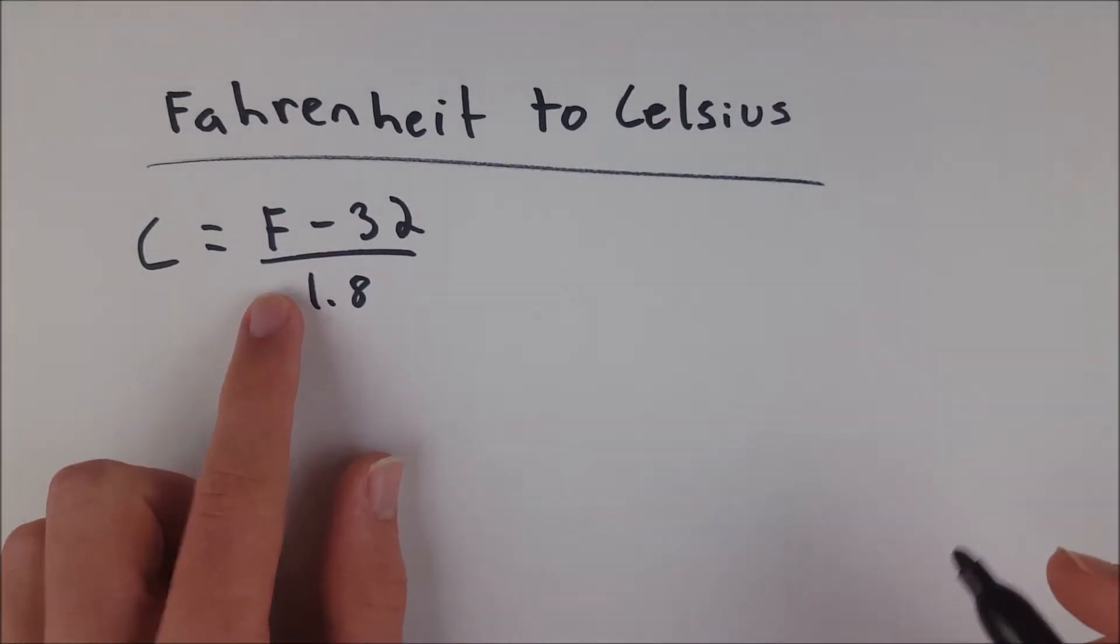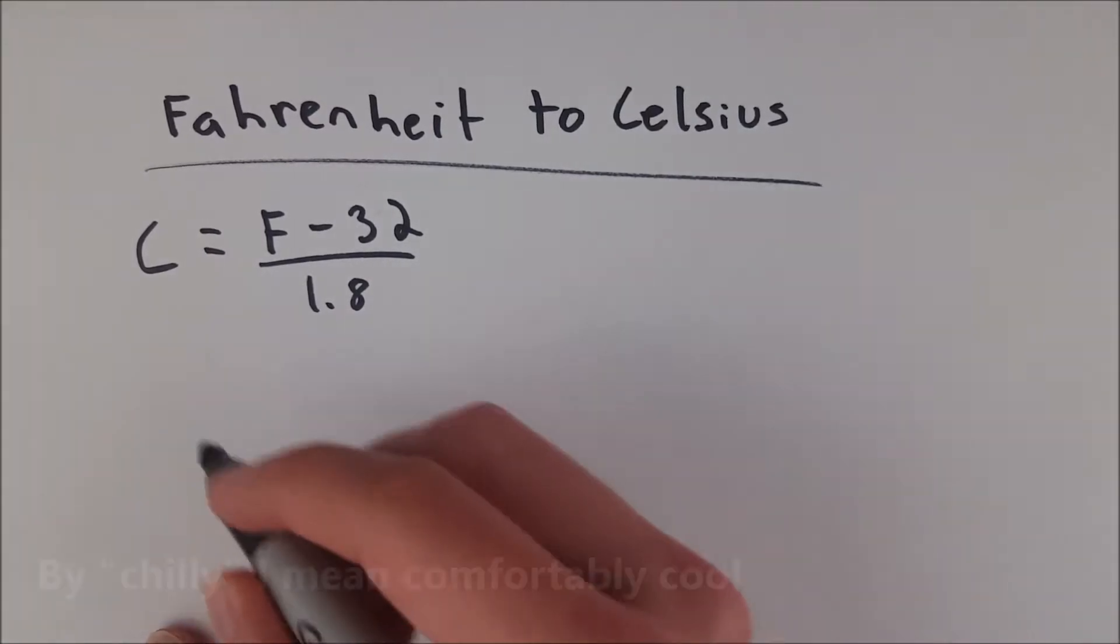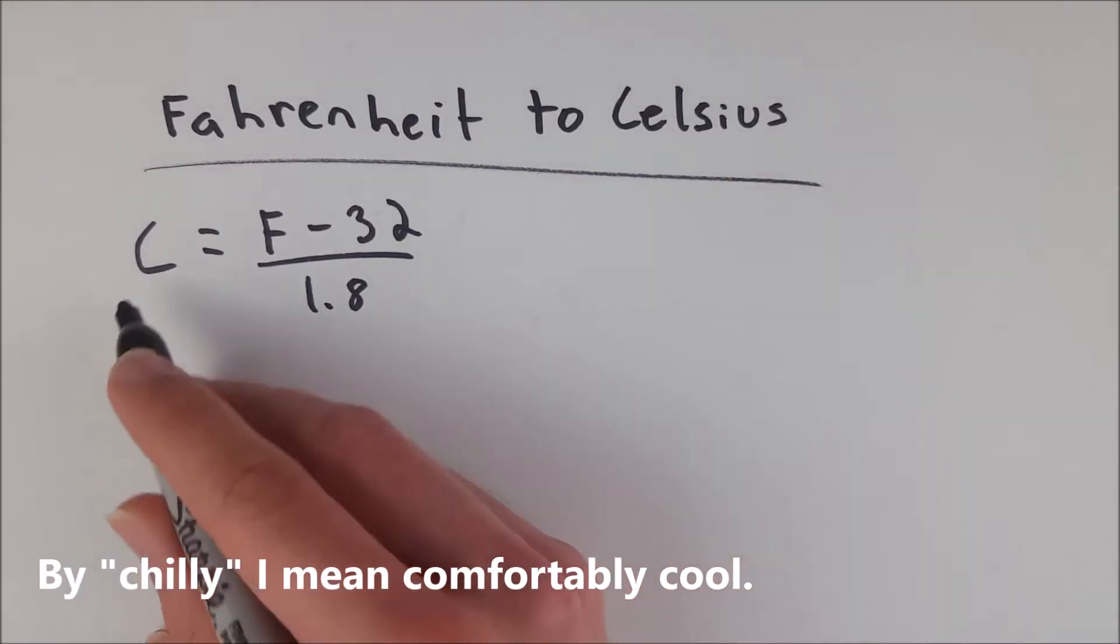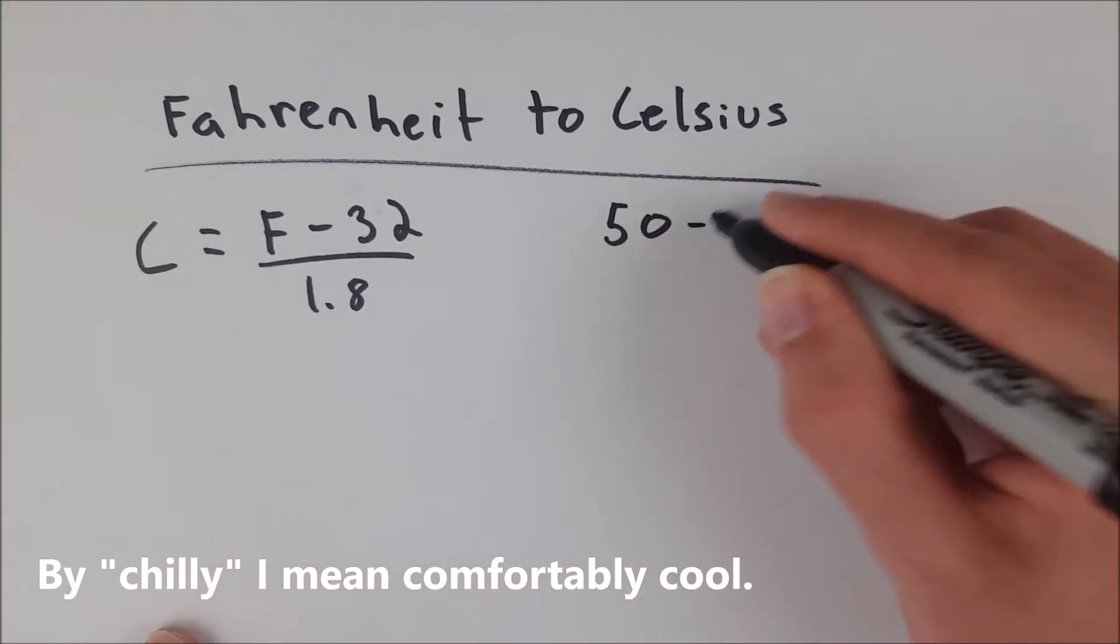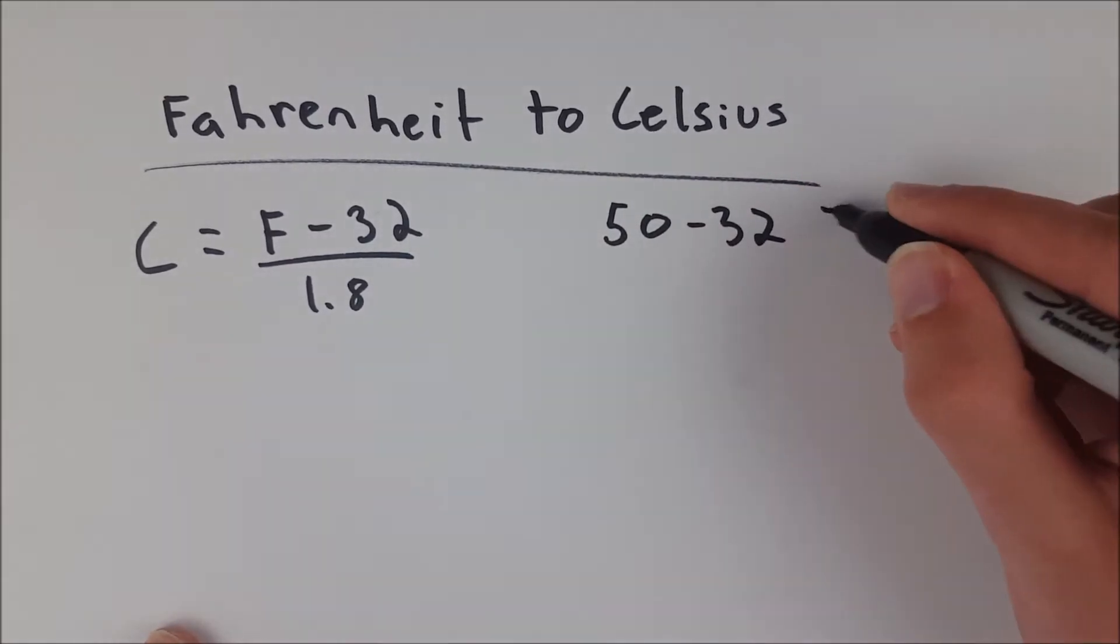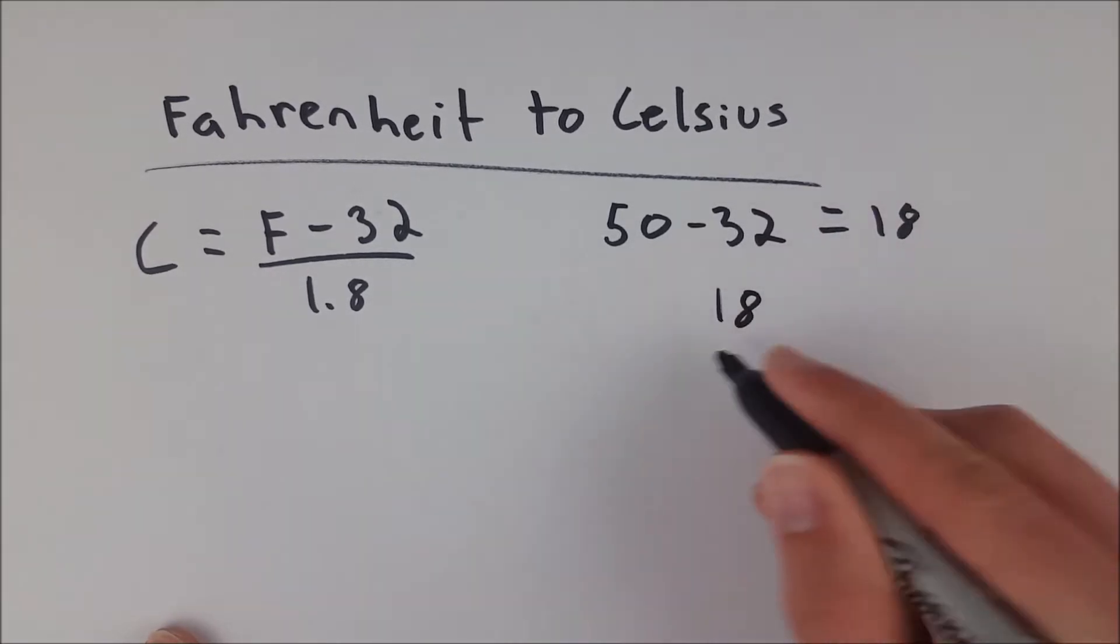So just to do a quick example, let's say we had 50 degrees Fahrenheit, nice chilly day. If we want to figure out what that measure would be in Celsius, we do 50 minus 32, and that is equal to 18, and then we divide 18 by 1.8.